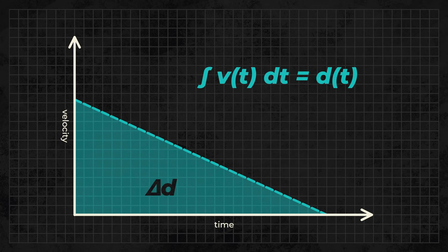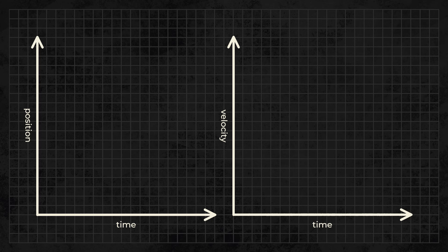When analyzing these graphs, make sure you know whether it's a position time graph or a velocity time graph. A good hint is if it's curved. A velocity time graph won't be curved, at least on AP Physics 1.